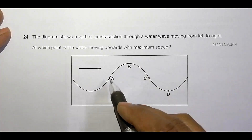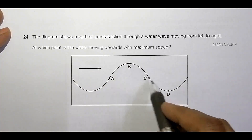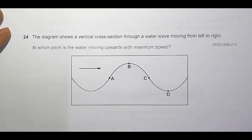So we have to find at which point water is moving upward with maximum speed. In order to identify that, what we can do is draw the diagram of this wave after an instant.